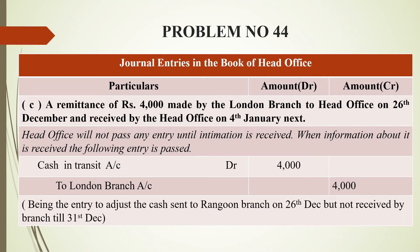Once the intimation has come, the entry is: Cash in Transit Account debit to London Branch Account. London branch account is credited because cash goes out from the branch. Cash is in flow toward the head office, so Cash in Transit is debited. The narration is: being the entry to adjust the cash sent by the branch on 26th December but not received by head office till 31st December.